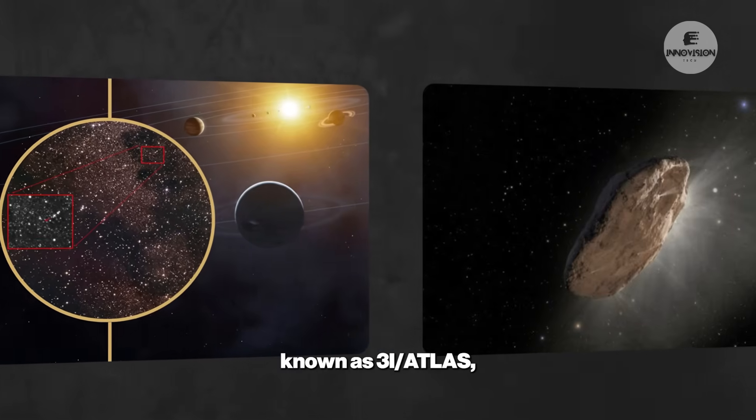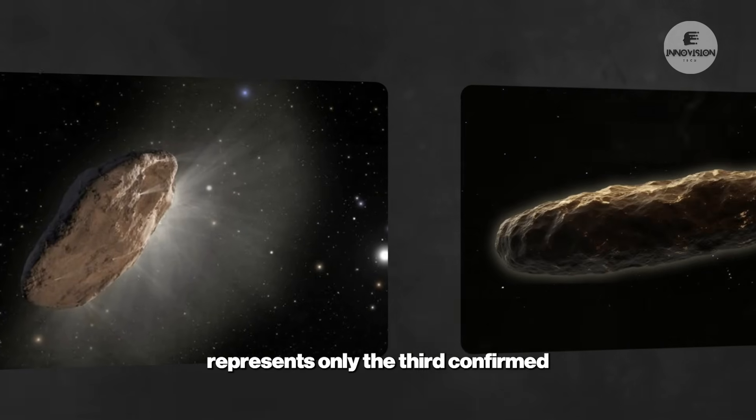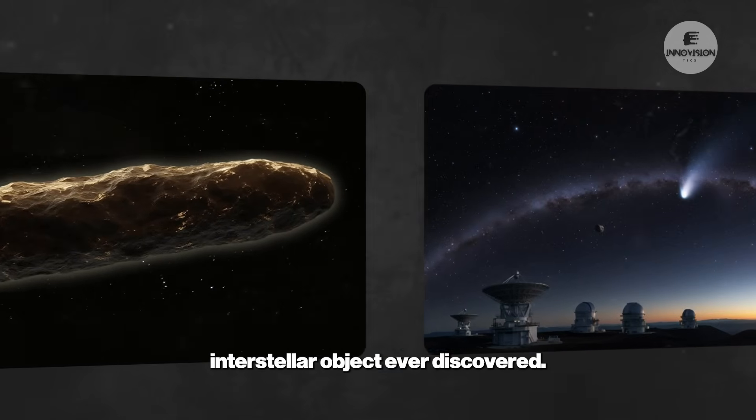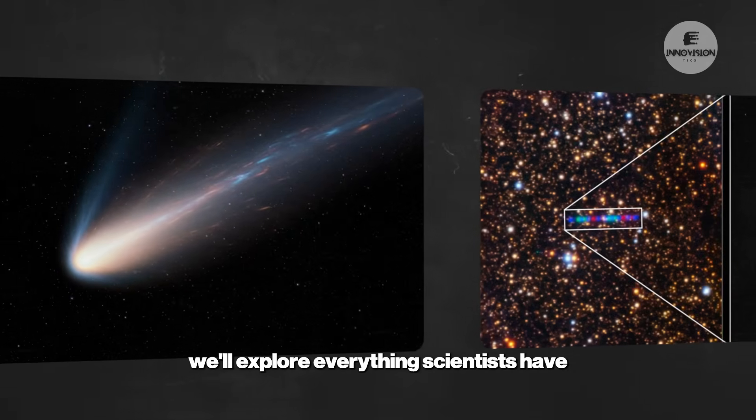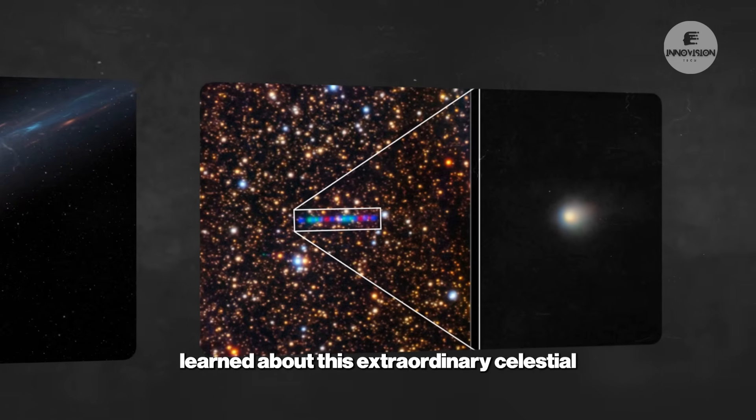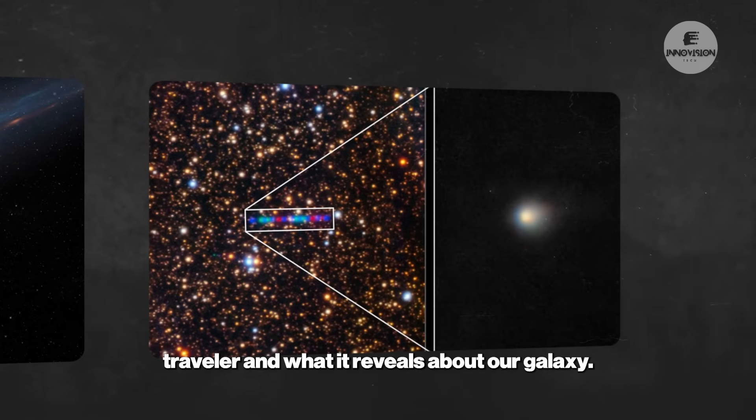This cosmic wanderer, known as 3i Atlas, represents only the third confirmed interstellar object ever discovered. Today, we'll explore everything scientists have learned about this extraordinary celestial traveler and what it reveals about our galaxy.